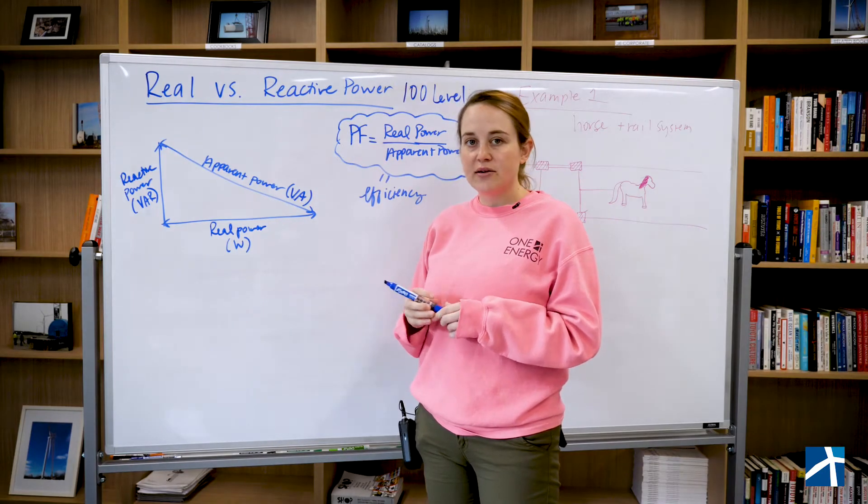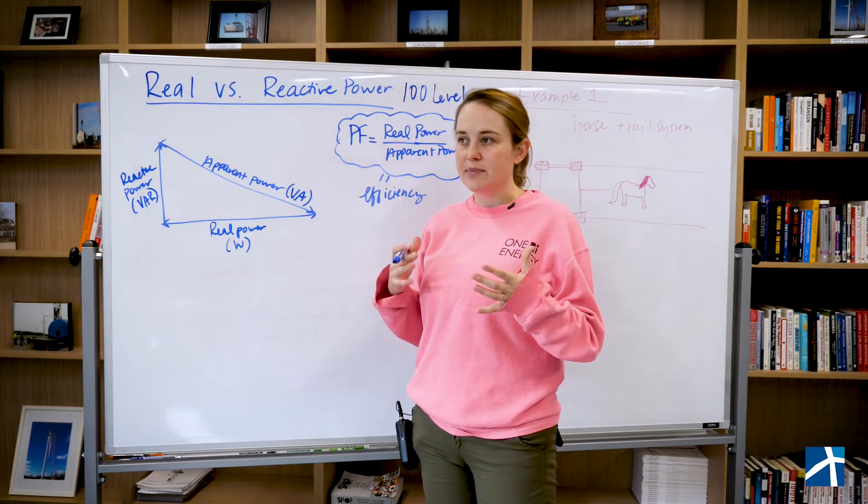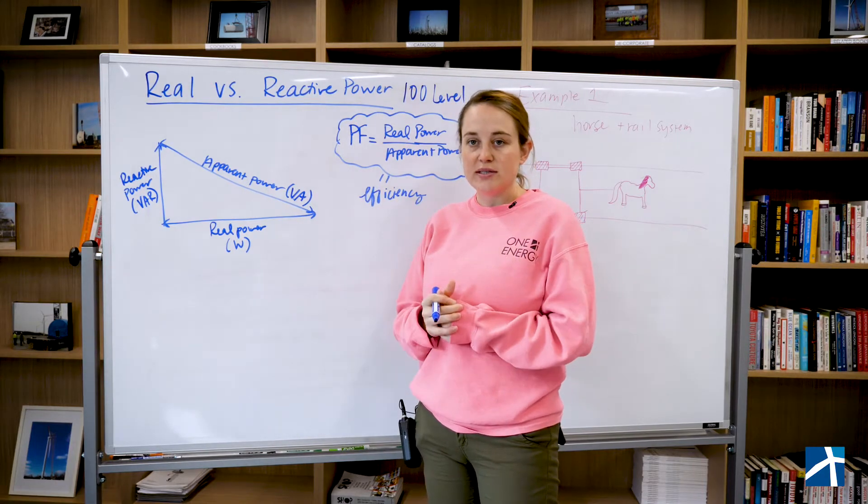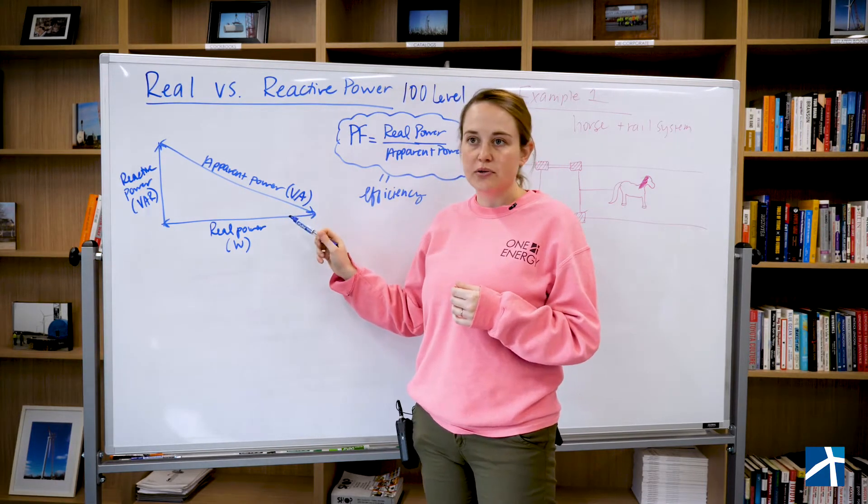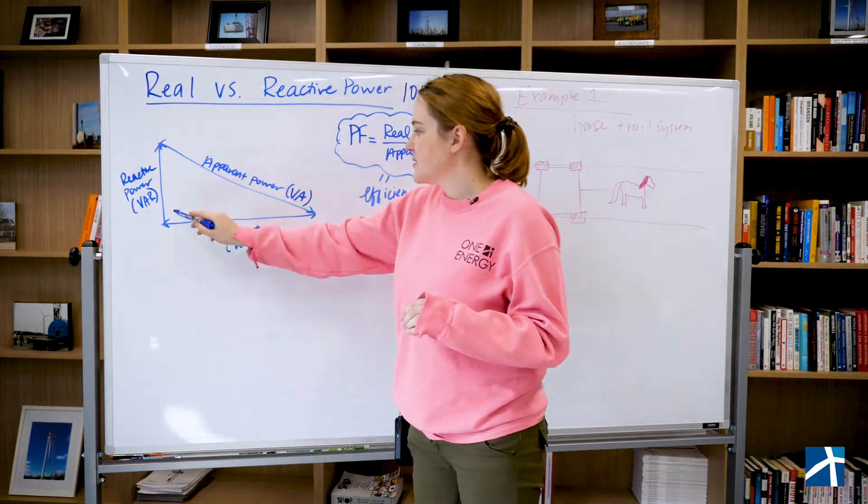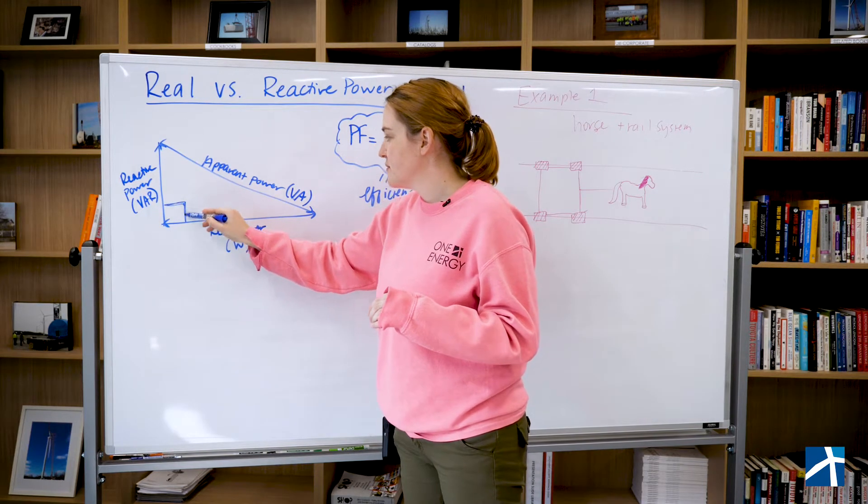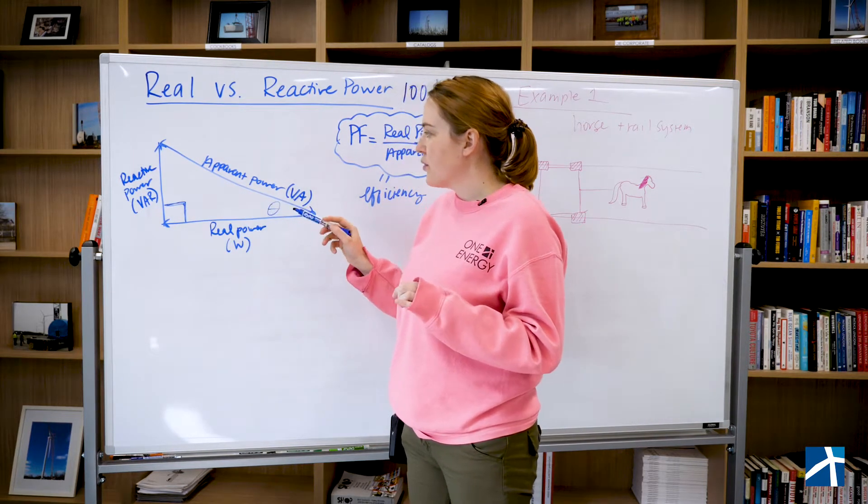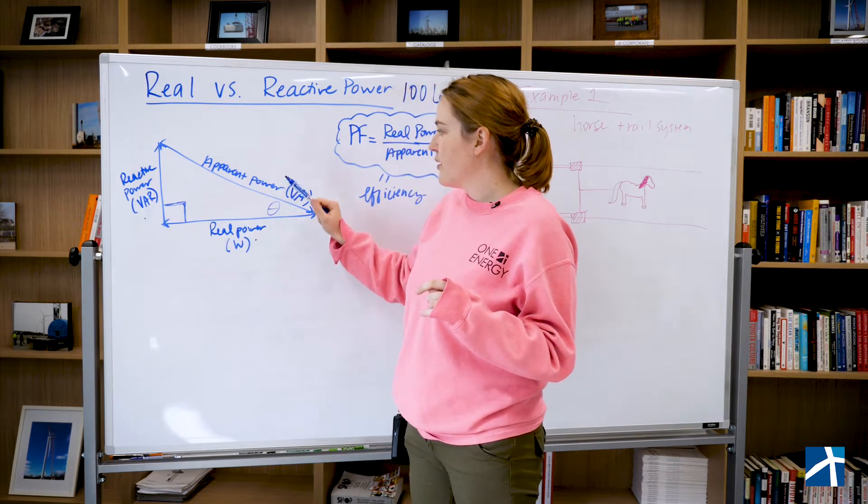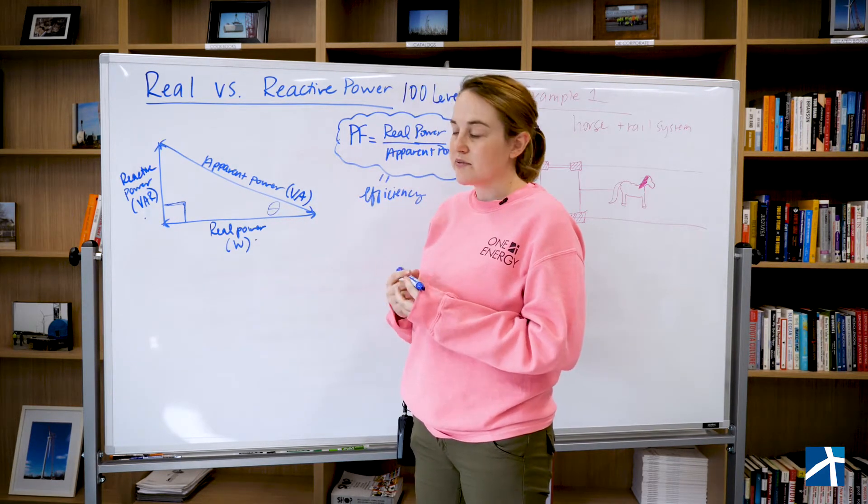It actually comes down to energy management in a factory or anybody who's doing regulations. This is how the utility is going to bill you as a major consumer of electricity. Looking at this, this is a right triangle with an angle, and reactive power, real power, and apparent power are the three legs of that triangle.